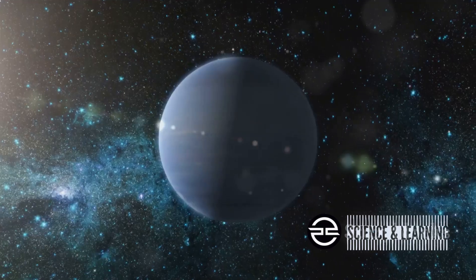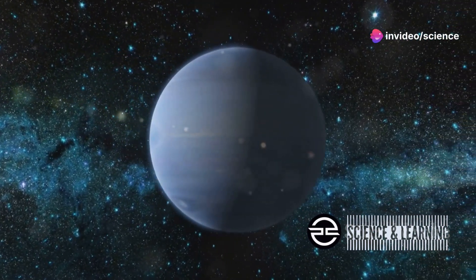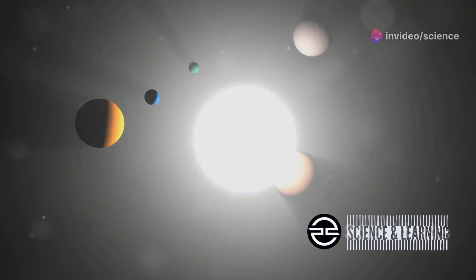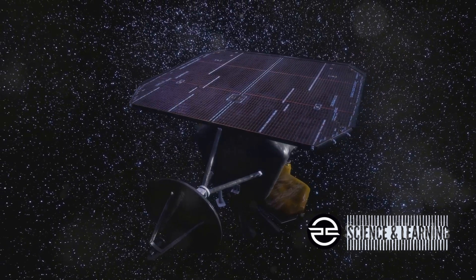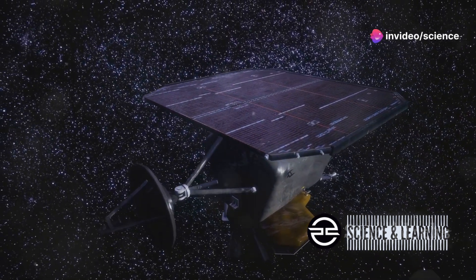It's a testament to human ingenuity and our relentless pursuit of knowledge. TESS's keen eye has allowed us to detect exoplanets that were once hidden from our view. The way TESS works is remarkably elegant. It looks for transits, which occur when a planet passes in front of its host star from our perspective. During a transit, the star's light dims ever so slightly, and TESS can detect these subtle changes in brightness.